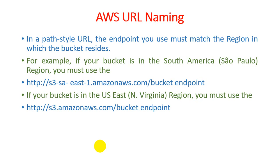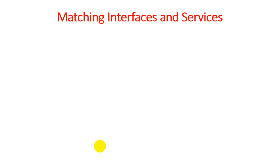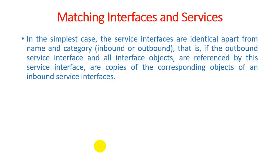Now we discuss matching interfaces and services as defined in AWS. In the simplest case, the service interfaces are identical apart from the name and category — inbound or outbound, meaning internal or external services. If the outbound service interface and all interface objects referenced by the service interface are copies of the corresponding objects of an inbound service interface, they are considered a match.